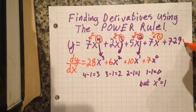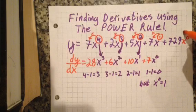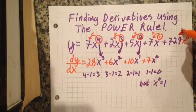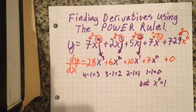And since 1 is x to 0, I can technically put an x to 0 behind that 729. Using the power rule, 0 times 729 goes to 0.